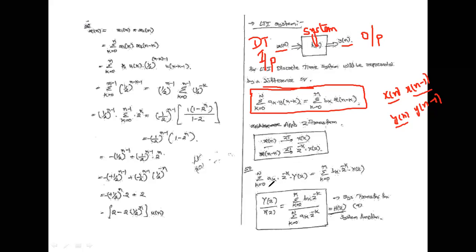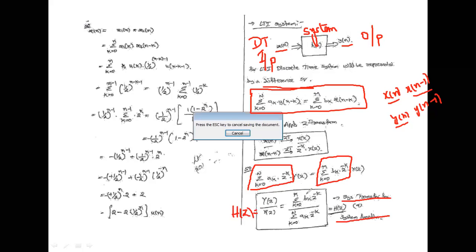The system transfer function H(z) equals Y(z)/X(z), which equals the sum from k=0 to M of b_k · z^(-k) divided by the sum from k=0 to N of a_k · z^(-k). Transfer function means output divided by input.